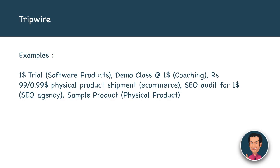It's very important that you give it for one dollar or 99 rupees — have some form of payment for it. Examples of tripwires: one-dollar trials for software products; a demo class at one dollar for coaching sessions; a 99-rupee or $0.99 physical product shipment for e-commerce; free audits for one dollar for an agency; or sample physical products for a physical product industry.